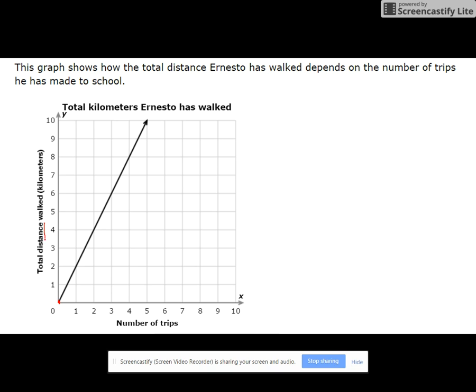We're looking at distance over here on the y-axis, right, and the number of trips on the x-axis. To find a constant of proportionality, which we're going to call k, you're always going to take y and divide it by x.